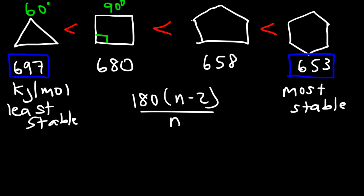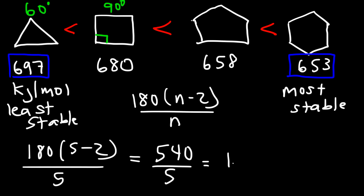Now for cyclopentane, it has five sides. So n is going to be 5 this time. 5 minus 2 is 3. And 180 times 3 is 540. So we need to take 540 and divide it by 5. 500 divided by 5 is 100. And 40 divided by 5 is 8. So you get 108 for the interior angle of cyclopentane. So 108 is very close to the ideal angle of 109.5. And so that's why cyclopentane doesn't have much ring strain. It has some, but very little.